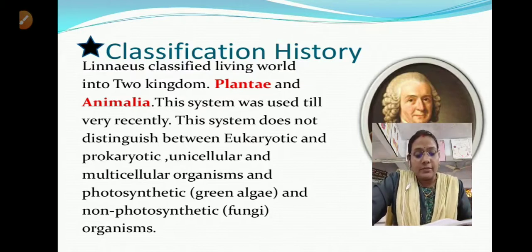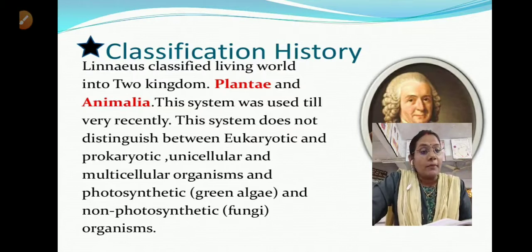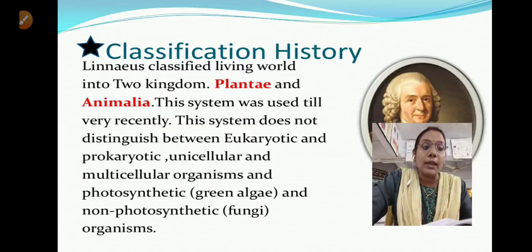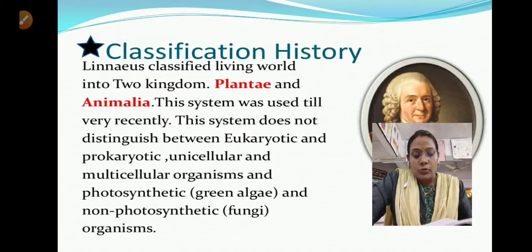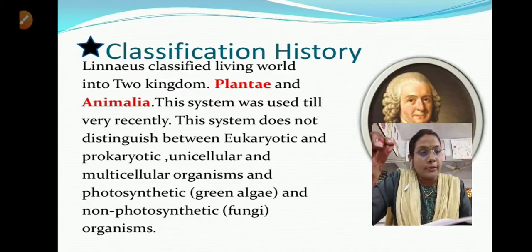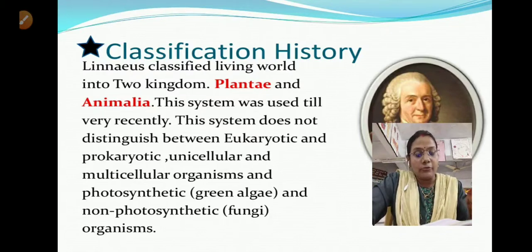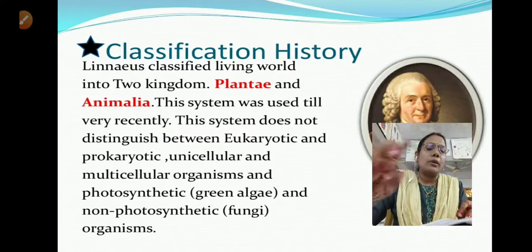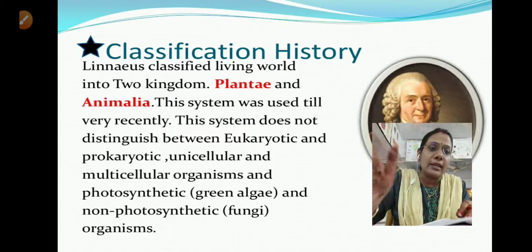The limitation of this system, as given in the NCRT book, is that it does not distinguish between eukaryotes and prokaryotes. Today we know living organisms can be prokaryotic or eukaryotic. This system also did not separate unicellular and multicellular organisms. Photosynthetic green algae and non-photosynthetic fungi were not differentiated - both algae and fungi were placed under plants.